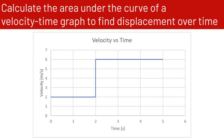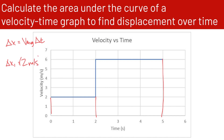We're going to start with the mathematical formula: delta x equals average velocity times delta t. Since this graph is in two pieces, we have to do both chunks separately. The average velocity for the first chunk is 2 meters per second, so delta x₁ equals 2 meters per second times delta t, which is 2 seconds. That gives us 4 meters.